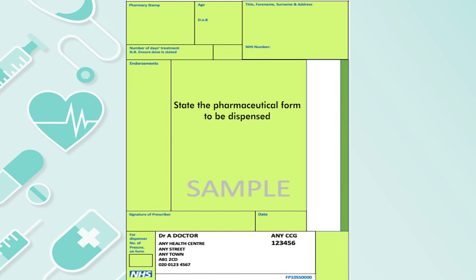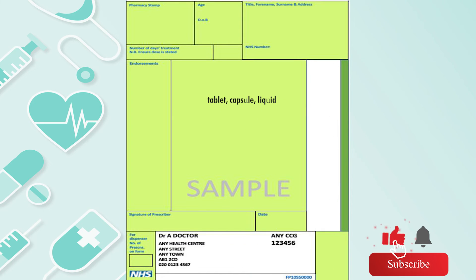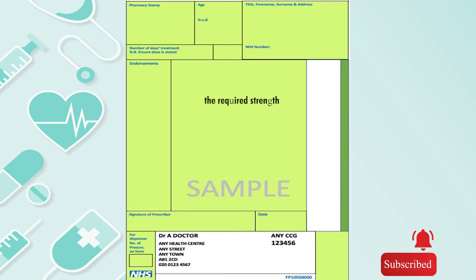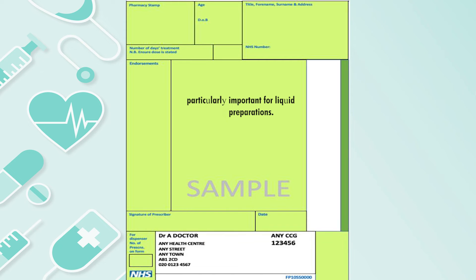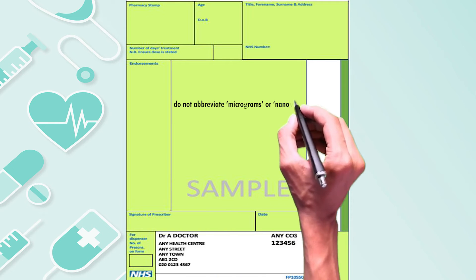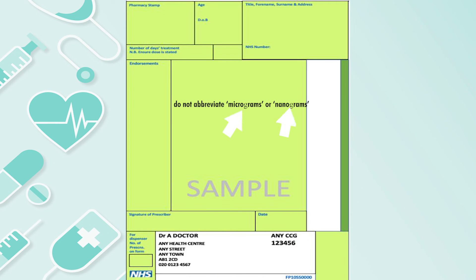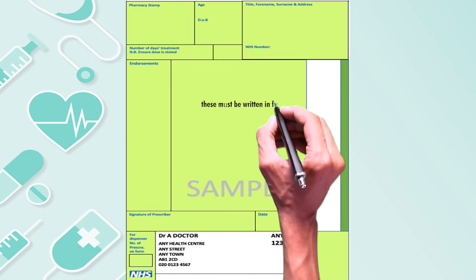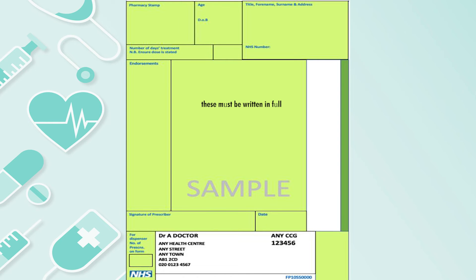State the pharmaceutical form to be dispensed — for example, a tablet, capsule, or liquid — and the required strength. This is particularly important for liquid preparations. Regarding abbreviations, it is acceptable to abbreviate milligrams to mg, but do not abbreviate micrograms or nanograms; these must be written in full to avoid any confusion or doubt.